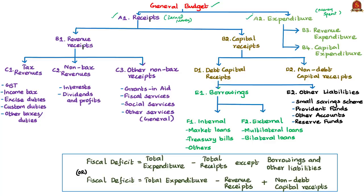Under receipts, there are two kinds: revenue receipts and capital receipts. Revenue receipts means the money which the government need not give back to anyone. Capital receipts means the money that the government has to pay back, as the government would have borrowed some amount for its usage. Similarly, expenditures can be classified into revenue expenditure and capital expenditure. The revenue receipts can be classified into three types: tax revenues, non-tax revenues, and other non-tax receipts.